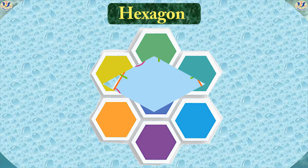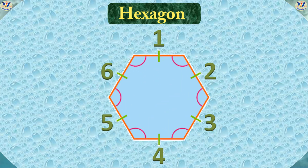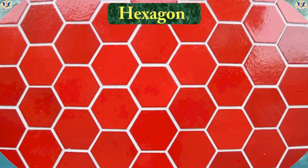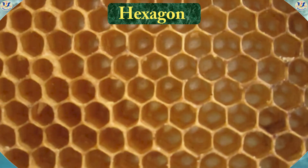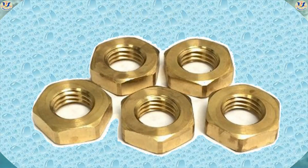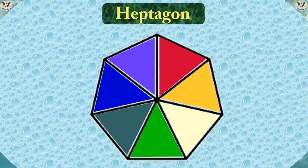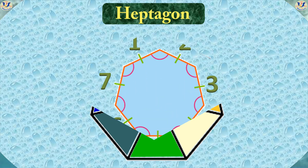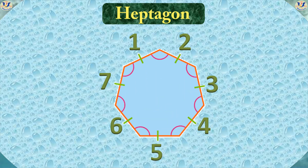Hexagon — has six sides and six angles. Heptagon — has seven sides and seven angles.